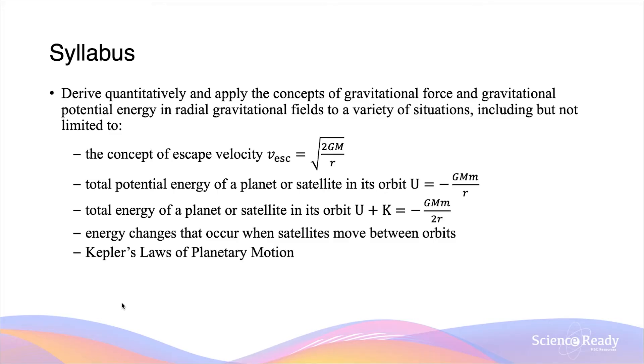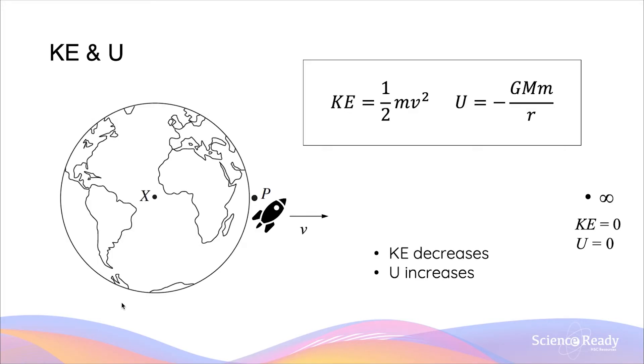Hello everybody, welcome to the video on escape velocity. Suppose you have a rocket of mass m that's initially on the surface of the earth at point p. We'll launch this rocket at an initial velocity of v, and it travels away from the earth.